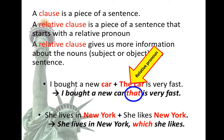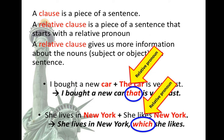In the first sentence, the relative pronoun is 'that.' In the second sentence, the relative pronoun is 'which.' We use 'that' not to repeat 'car,' and we use 'which' not to repeat 'New York.'